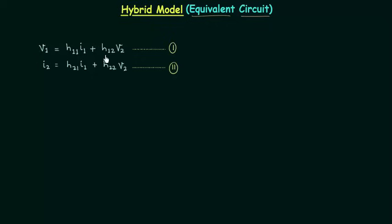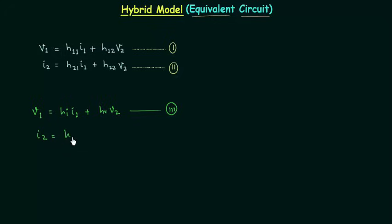So we can rewrite the two equations. Equation 1 becomes V1 = HI·I1 + HR·V2 (Equation 3). Equation 2 becomes I2 = HF·I1 + HO·V2 (Equation 4). We will draw the equivalent circuit for Equation 3 and Equation 4 separately.